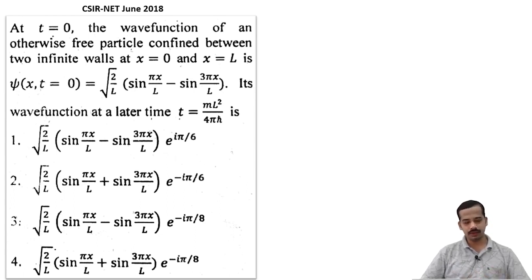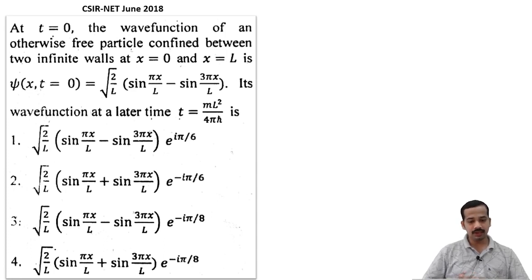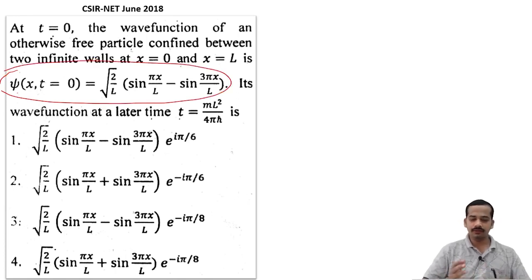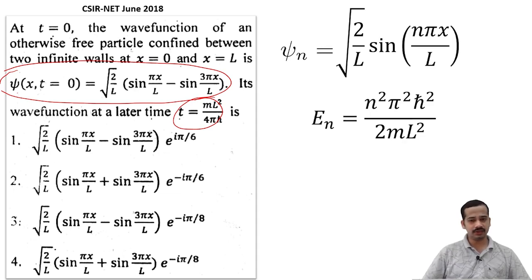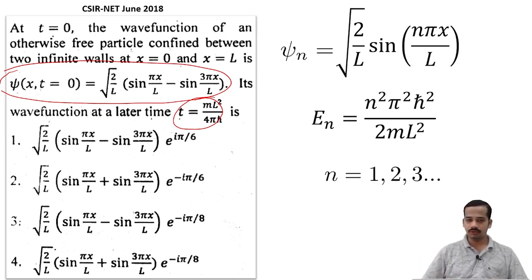Let me take a CSIR-NET June 2018 question. Pause the video and read the question carefully. At time t equal to 0, the wave function of a free particle confined between two infinite walls at x equal to 0 and x equal to L is psi(x, 0) equals root(2/L) times [sin(pi*x/L) minus sin(3*pi*x/L)]. The first thing we need to do is collect the energy eigenstates and energy eigenvalues. For a particle in a box confined between x equal to 0 and x equal to L, the energy eigenstates are root(2/L) sin(n*pi*x/L) and energy eigenvalues are n-squared pi-squared h-bar-squared over 2mL-squared, where n equals 1, 2, 3, and so on.